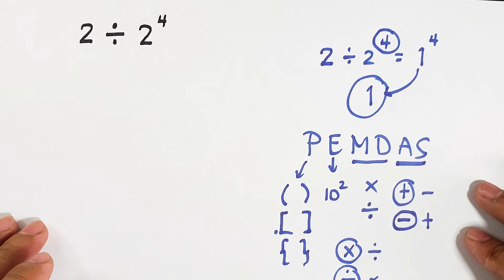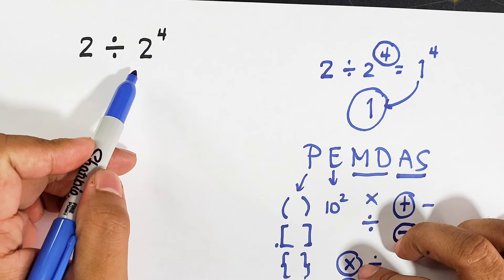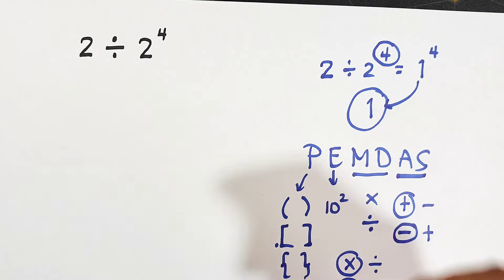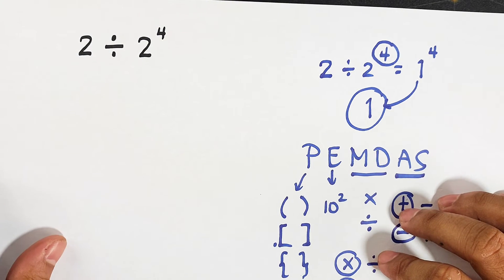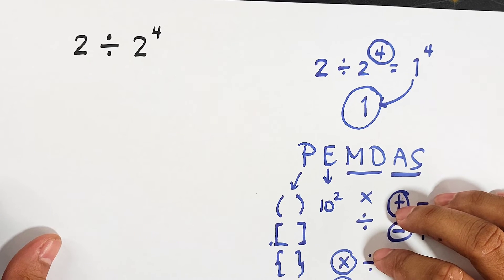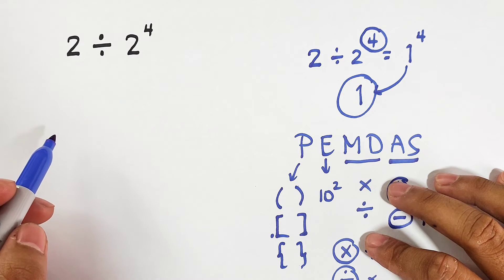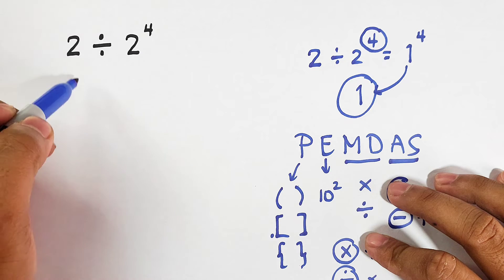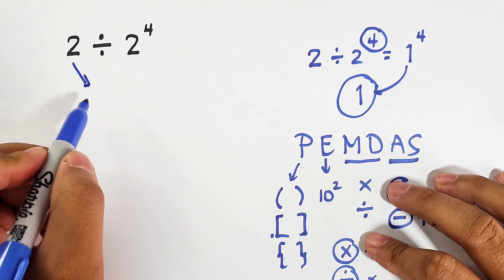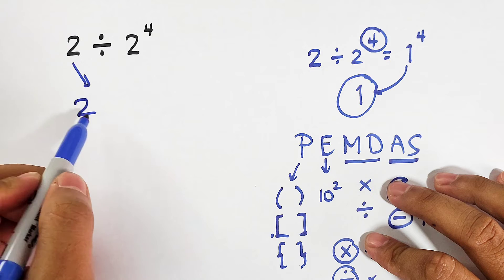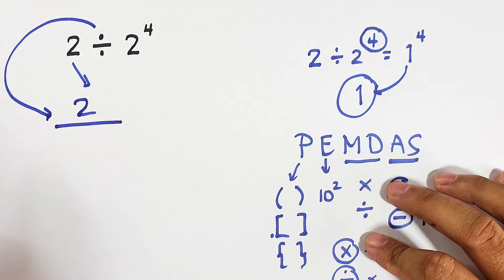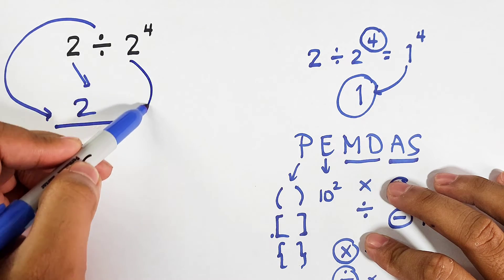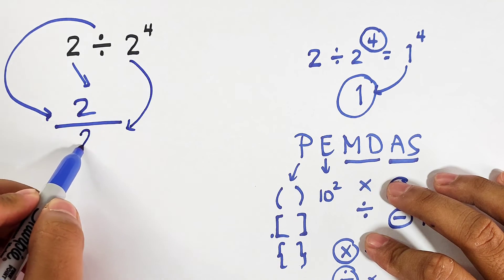Now let's go back to the topic. We have 2 divided by 2 raised to the 4th power, and the answer is not 1. Let us take this problem in a different manner — we will convert it so that this 2 becomes the numerator, the division symbol becomes the bar sign, and this becomes the denominator.